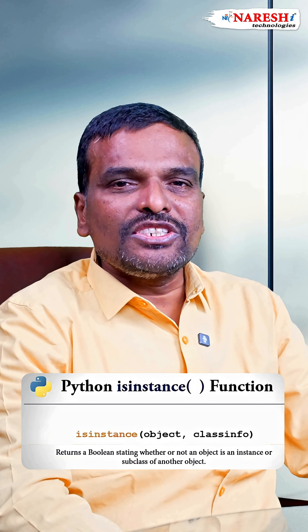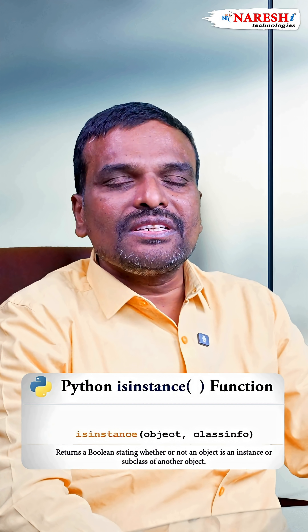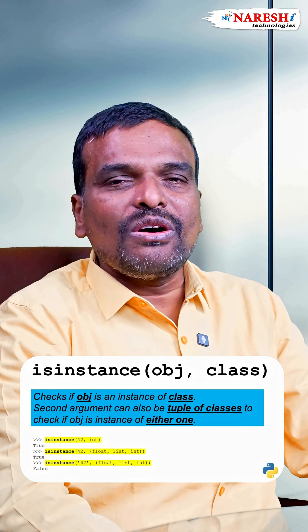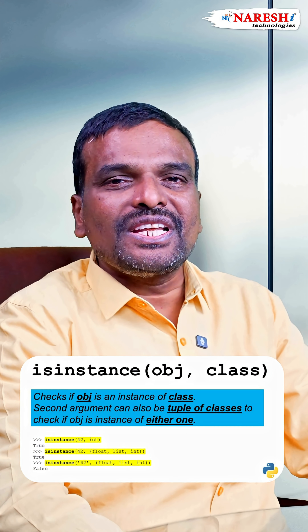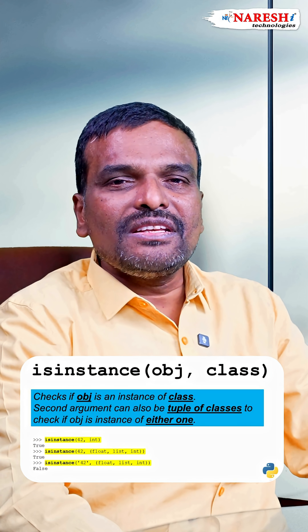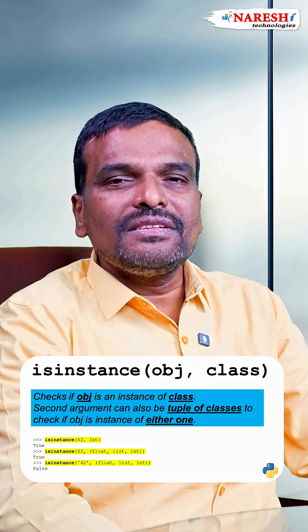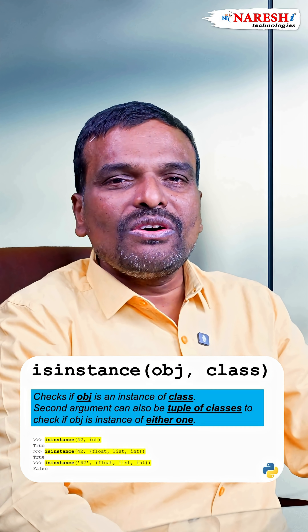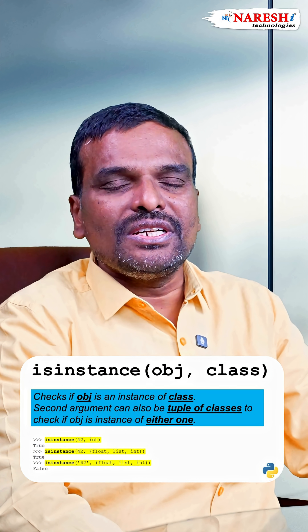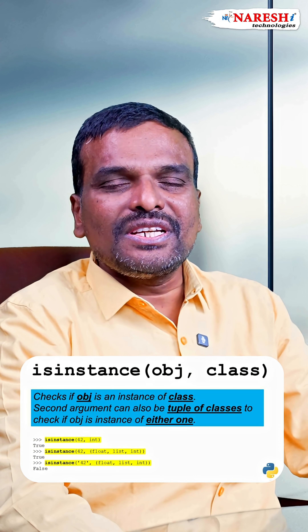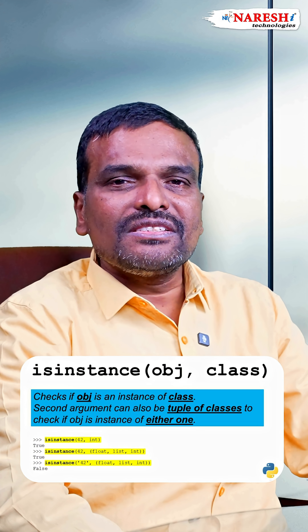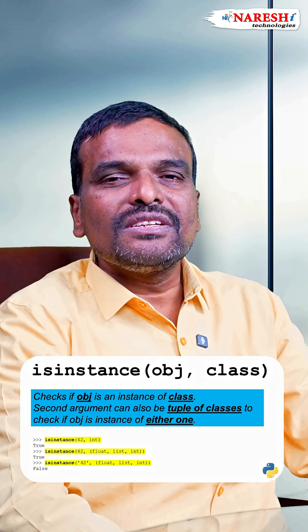When it comes to isinstance, it returns a boolean value — either true or false. It is used to examine whether an object belongs to a specific type. isinstance takes an object name and a class list. If the object belongs to any one of the types given inside that list, it returns true; otherwise, it returns false.